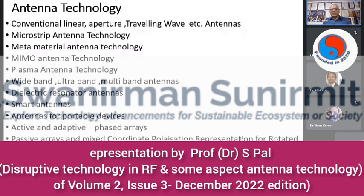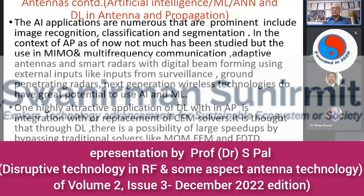Artificial intelligence applications are numerous and prominent because all this disruption will be further complicated by the use of artificial intelligence, machine learning, ANNs, and deep learning — in antenna propagation particularly, but affecting every part of technology. AI applications include image recognition, classification, and segmentation in the context of antenna propagation. As of now, not much has been studied, but the use in MIMO, multi-frequency communication, adaptive and smart radars with digital beamforming using external inputs like surveillance and ground-penetrating radars — next-generation wireless technologies have great potential to use AI and machine learning.